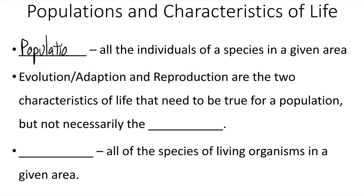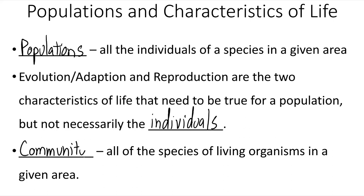Populations include all the individuals of a species in a single area. Evolution, adaptation, and reproduction are two characteristics of life that need to be true for a population, but not necessarily for individuals. A community is going to be all of the species of living organisms in a specific area.